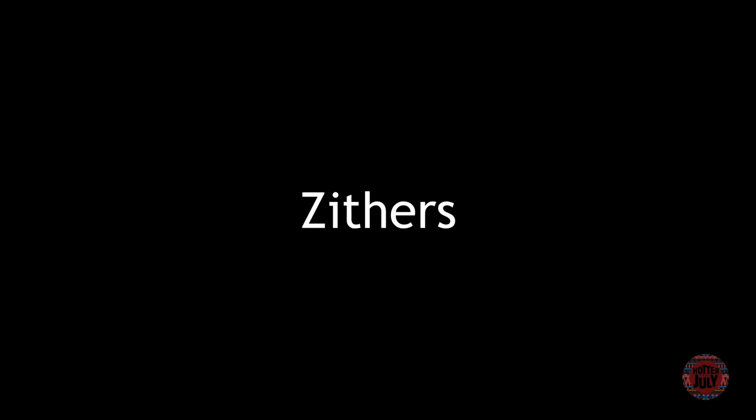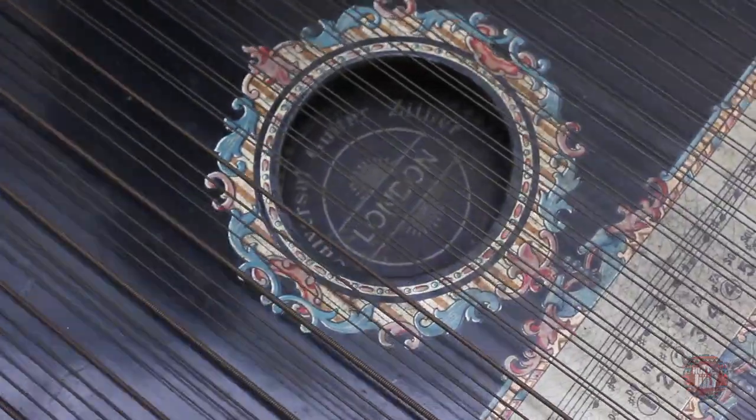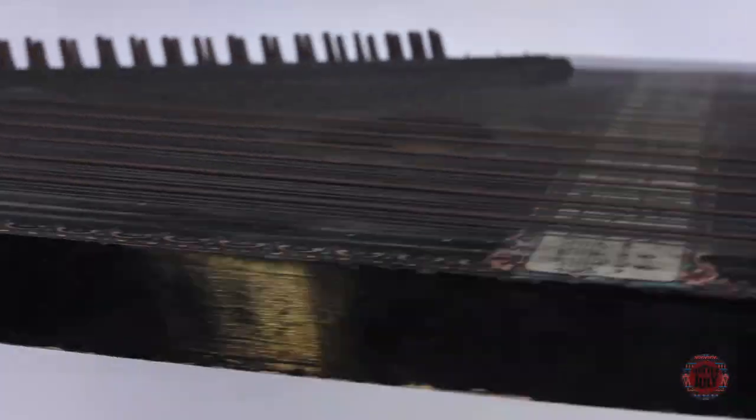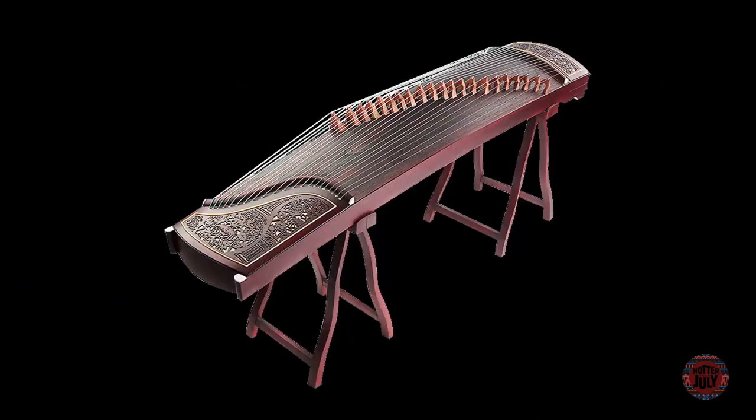Roughly speaking, stringed instruments can be put into one of three categories: zithers, lutes and harps. Zithers are a family of instruments whose strings are stretched across a typically hollow body. Examples of zithers are psaltery, dulcimers, auto harp, zhang and koto.